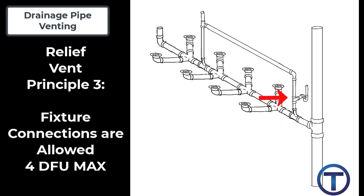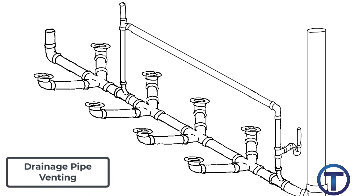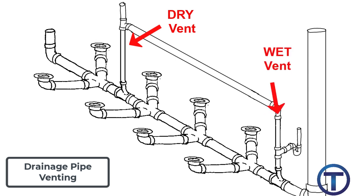Relief vent principle three: the relief vent is allowed to be a fixture drain vent with a maximum of four drainage fixture units. We emphasized earlier that the circuit vent must be a dry vent. But in this case, the relief vent on the downstream side from the circuit can be a wet vent. It could be a sink, a drinking fountain, or anything else, as long as it doesn't exceed four drainage fixture units.